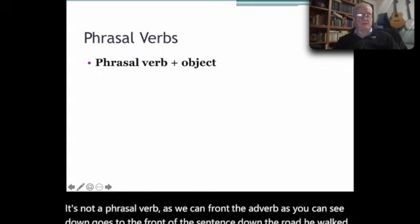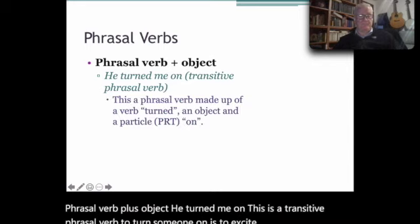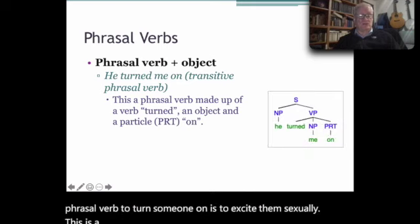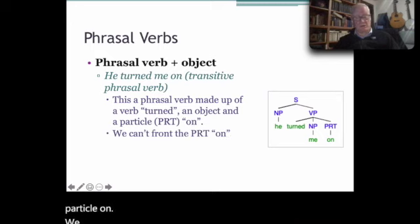Phrasal verb plus object. 'He turned me on.' This is a transitive phrasal verb. To turn someone on is to excite them sexually. This is a phrasal verb made up of a verb 'turned,' an object, and a particle 'on.' We cannot front the particle 'on' in this sentence.